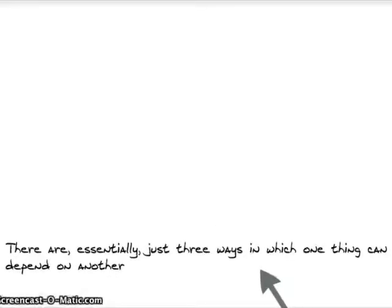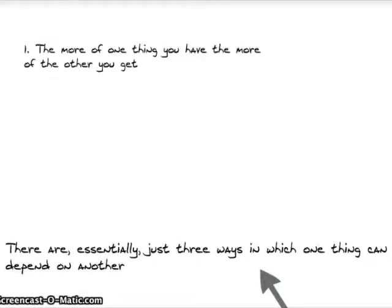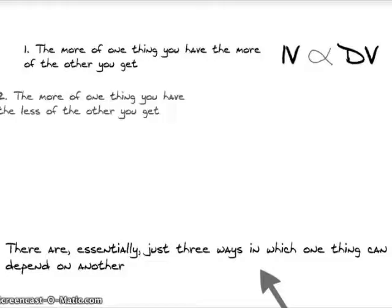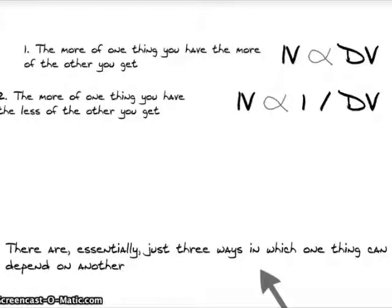There are essentially only three ways that this dependency relationship can happen. First, you could have a situation where if you have more of one thing, you get more of another — so if you increase the independent variable, you see an increase in the dependent variable. Mathematically, we say the IV is directly proportional to the DV. Alternatively, the more of the first thing you have, the less of the second you get — the IV is indirectly proportional to the DV.